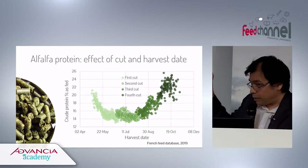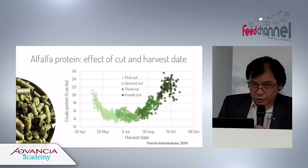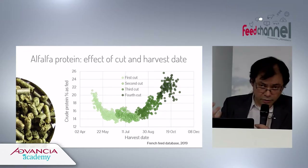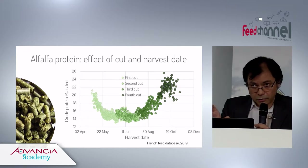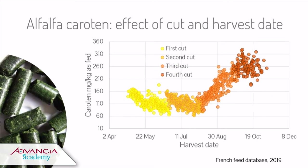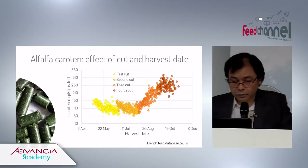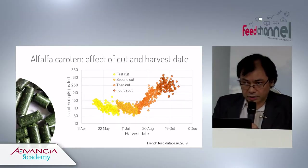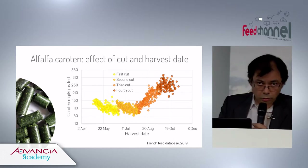They work with very large variability in protein content, crude fiber content, and everything else, and try to make a product with more precise composition. This same effect of harvest date and cut can be seen on every component of the plant, including carotene.